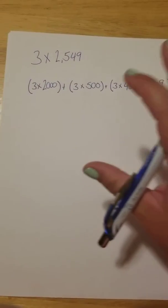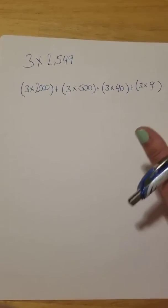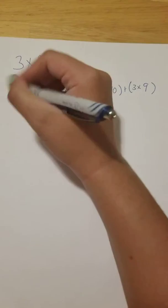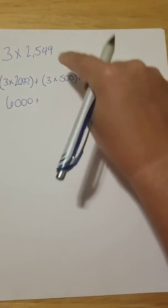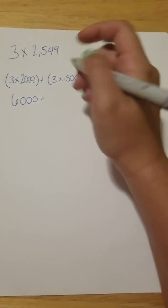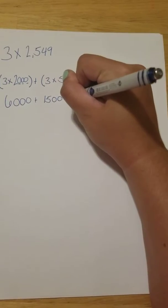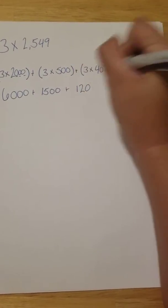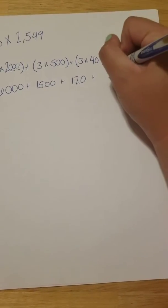Now I'm going to have to multiply all these numbers. And they look really scary because they're really big numbers. But that's okay. We're going to do some magic. We're going to cover up the zeros. 3 times 2 is 6. There's three zeros at the end. 3 times 5 is 15, with two zeros at the end. 3 times 4 is 12, with one zero at the end. And 3 times 9 is 27.